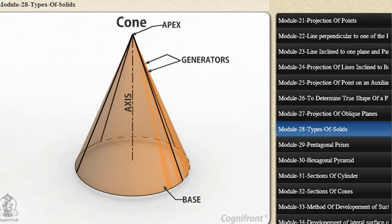Its axis joins the apex with the center of the base, to which it is perpendicular. Straight lines drawn from the apex to the circumference of the base circle are all equal and are called generators of the cone. The length of the generator is the slant height of the cone.